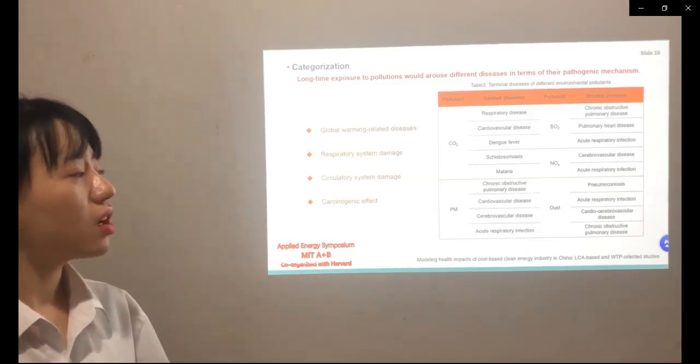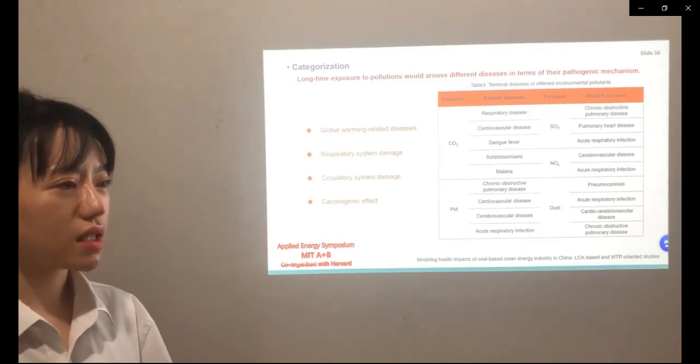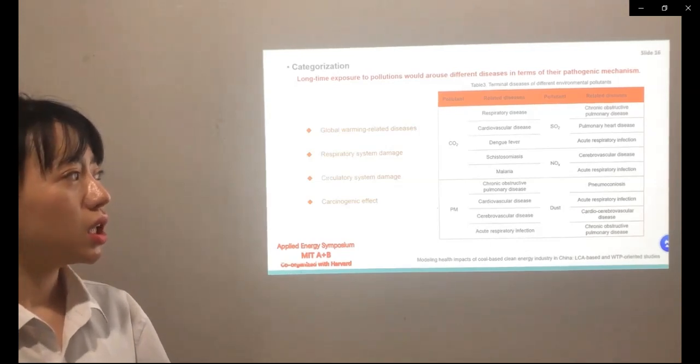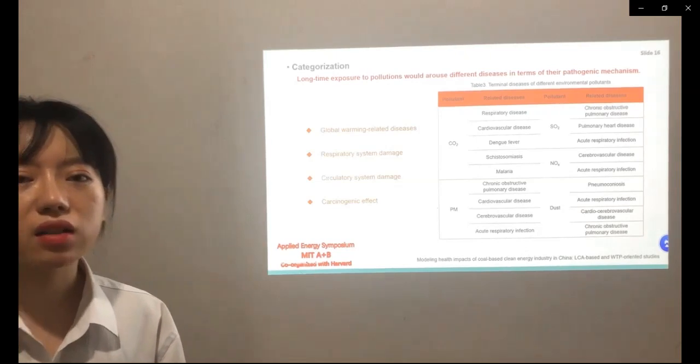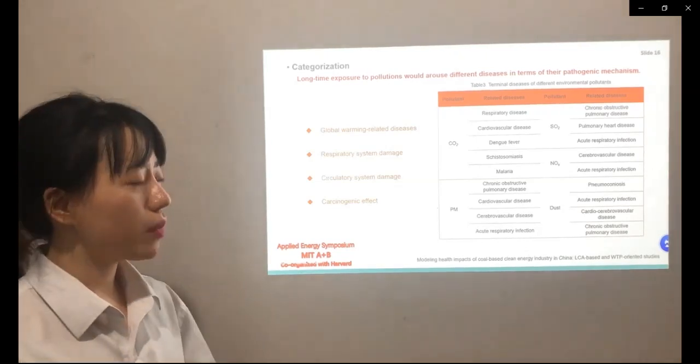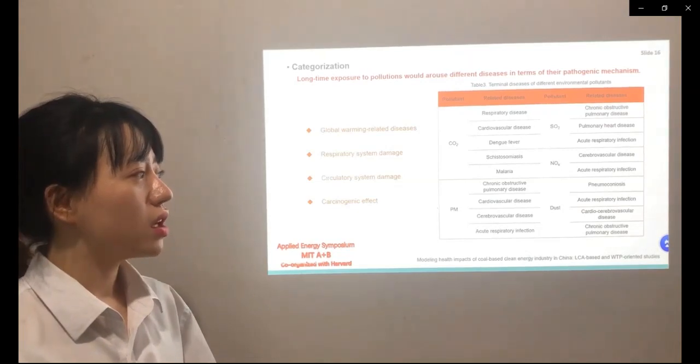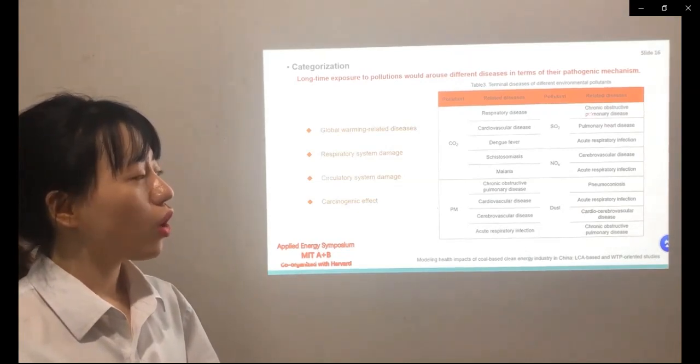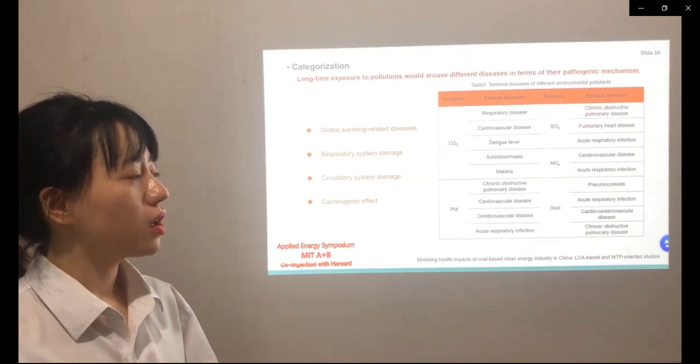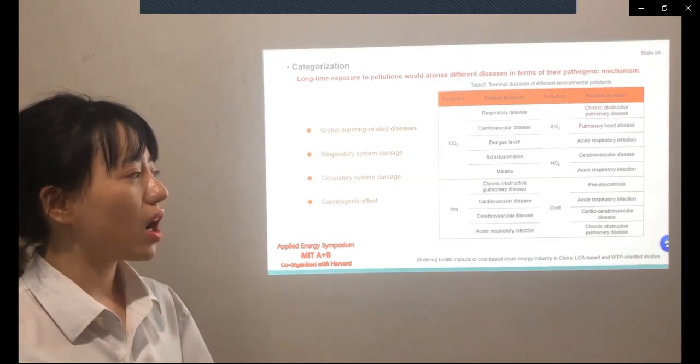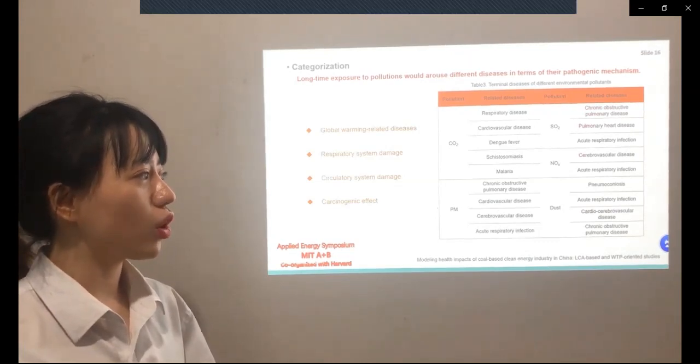Here, the most important thing is dividing the environmental pollution into the corresponding terminal diseases. For example, it is demonstrated that sulfur dioxide would cause chronic obstructive pulmonary disease, pulmonary heart disease, and acute respiratory infections.